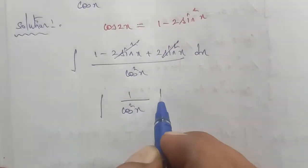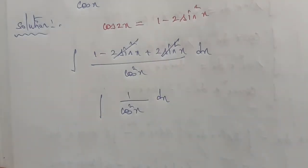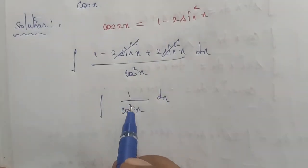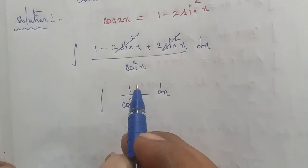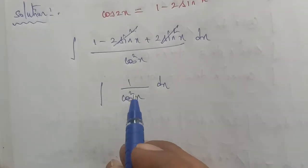So we have integration of 1 by cos square x into dx. 1 by cos square x, the formula is the reciprocal, which is sec square x.